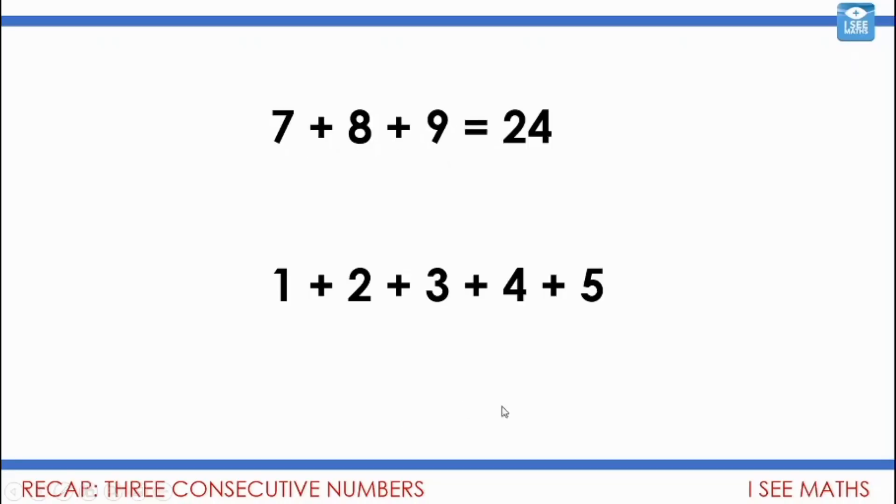We were looking at three consecutive numbers. Well, here we've got five consecutive numbers. Maybe you added the five and the one to make a six and the four and the two makes another six and then the three as well. Or I guess what you could do is if you change each number to be a three, this is a three. That's one less than three. That's one more than three. That's two less than three. That's two more than three. It's like having five threes. Either way, we get to 15. Well done for all your work yesterday. I loved seeing all the examples.